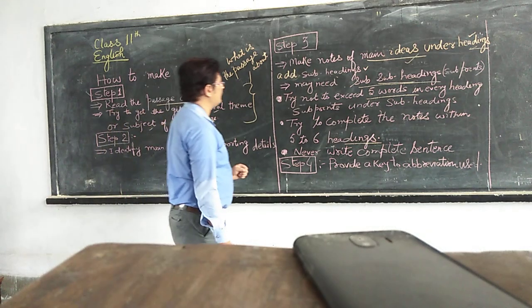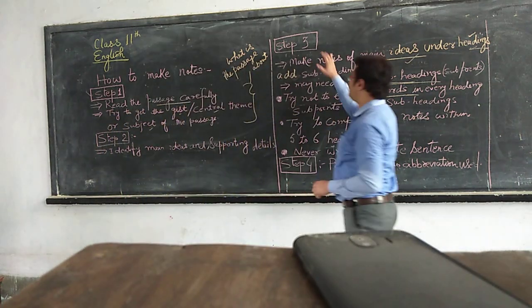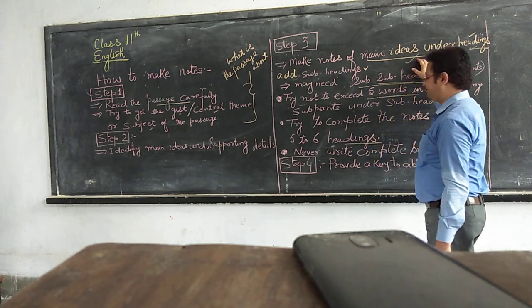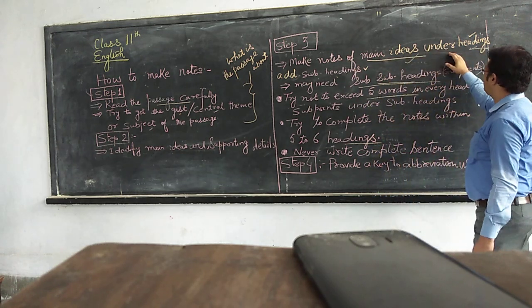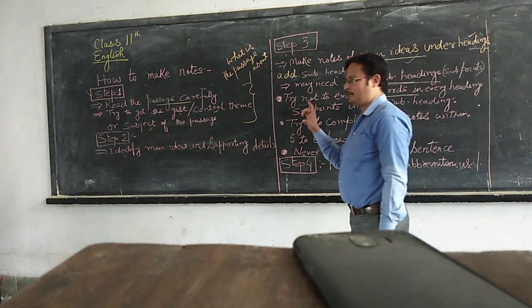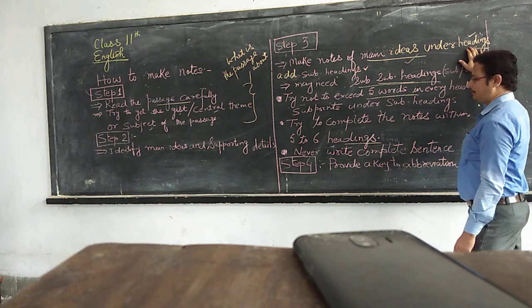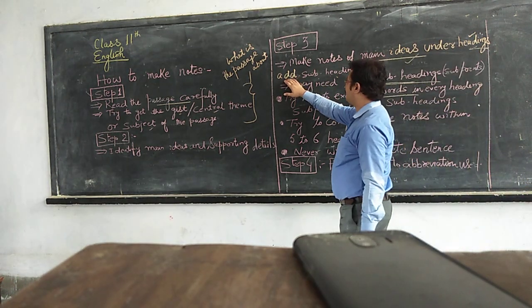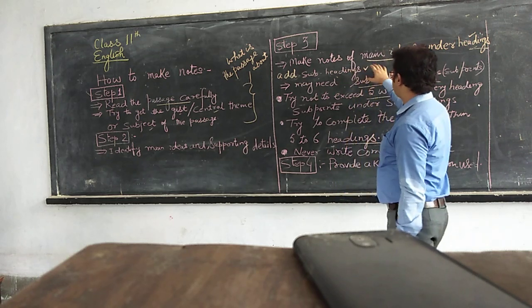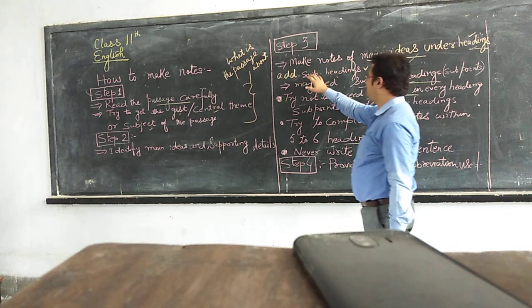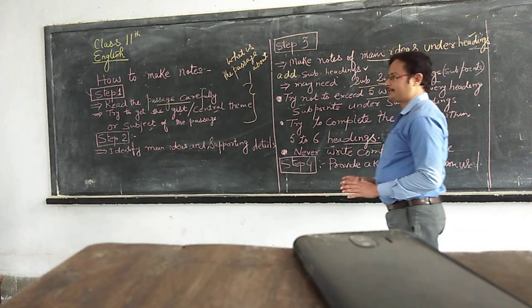In step number 3, make notes of main ideas and other headings. It means when you start making notes, first you have the main headings, and it will follow subheadings. You may need subheadings, so make notes of main ideas and other headings and add subheadings if it is required.